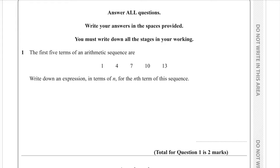Question 1. The first 5 terms of an arithmetic sequence are 1, 4, 7, 10, and 13. Write down an expression in terms of n for the nth term of this sequence.